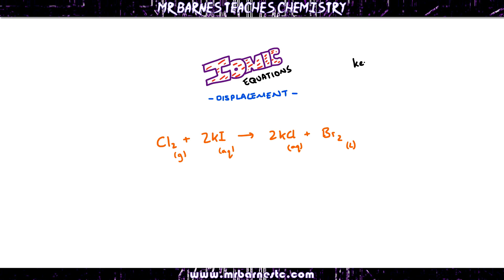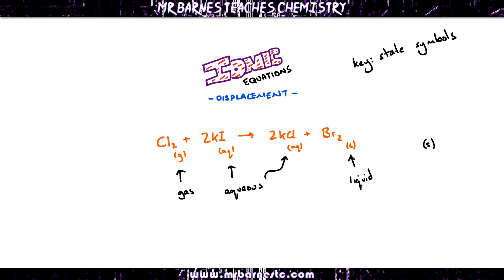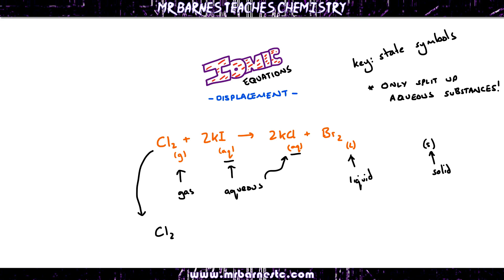Now the next key thing when it comes to writing ionic equations is the state symbols. G tells us we've got a gas; AQ means aqueous, so that's dissolved; L means liquid; and S means solid. The important rule is you only split up the aqueous ions — they're the only ones where the ions are free to move. Everything else goes down as it is, so Cl₂ stays as Cl₂(g) and bromine goes as Br₂(l).